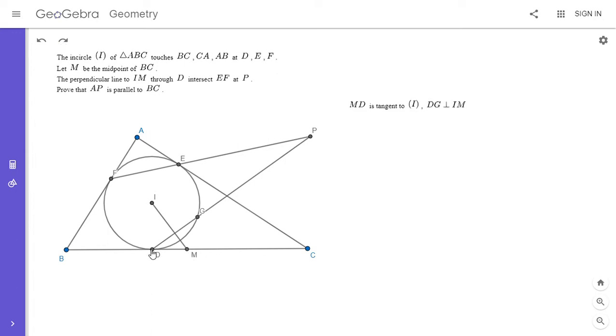it turns out that MG also has to be tangent to the incircle. So I'm going to write this out. So since MD is tangent to the incircle, and MI is perpendicular to DG, which I've written here, by symmetry, MG also has to be tangent to the incircle.